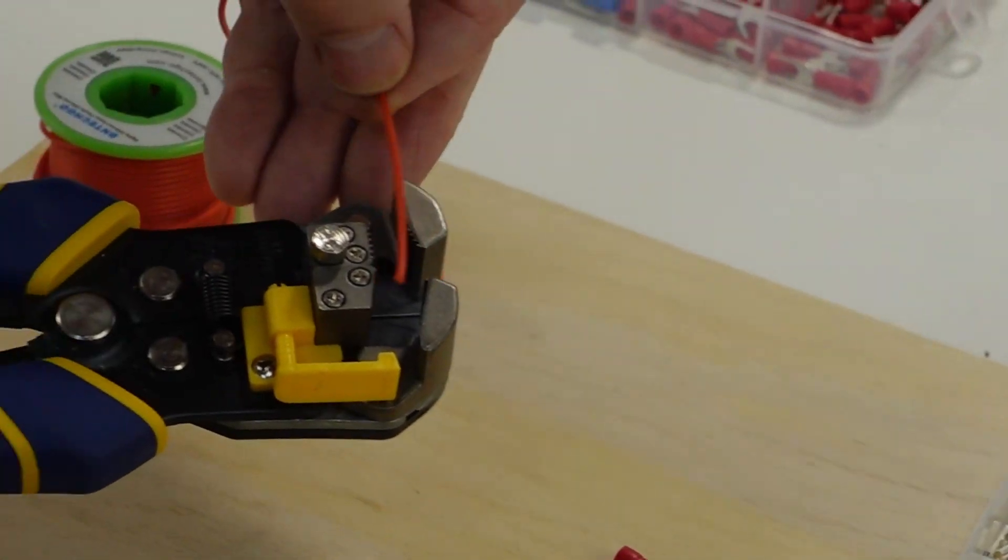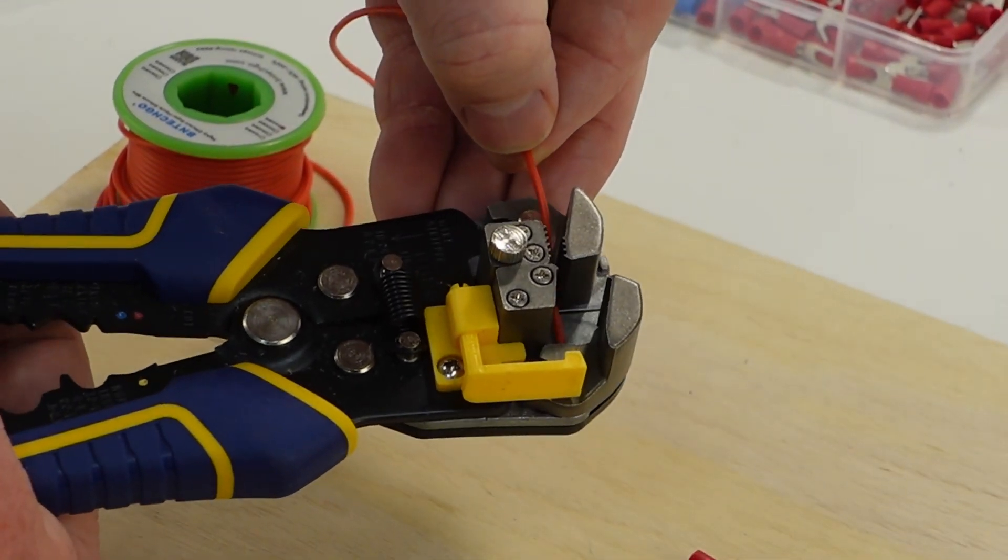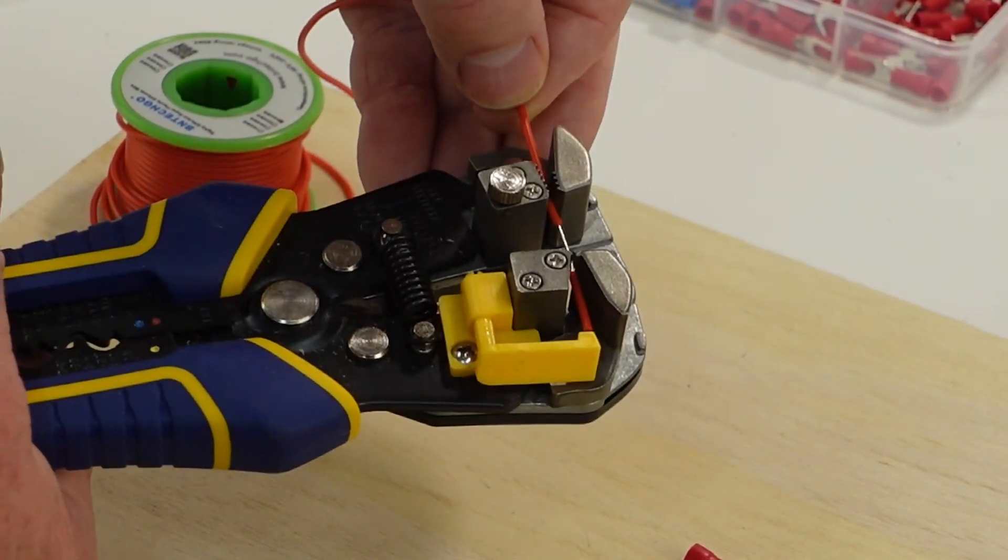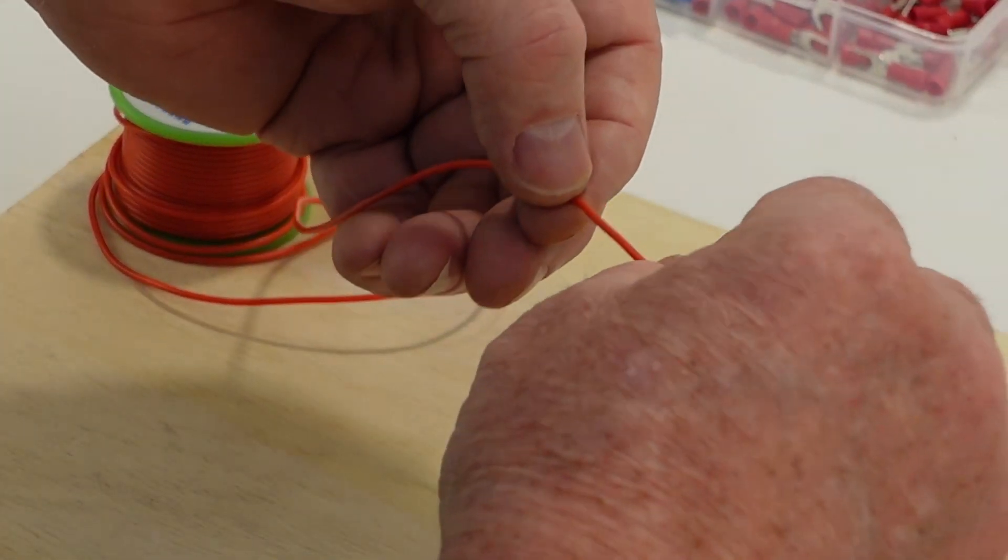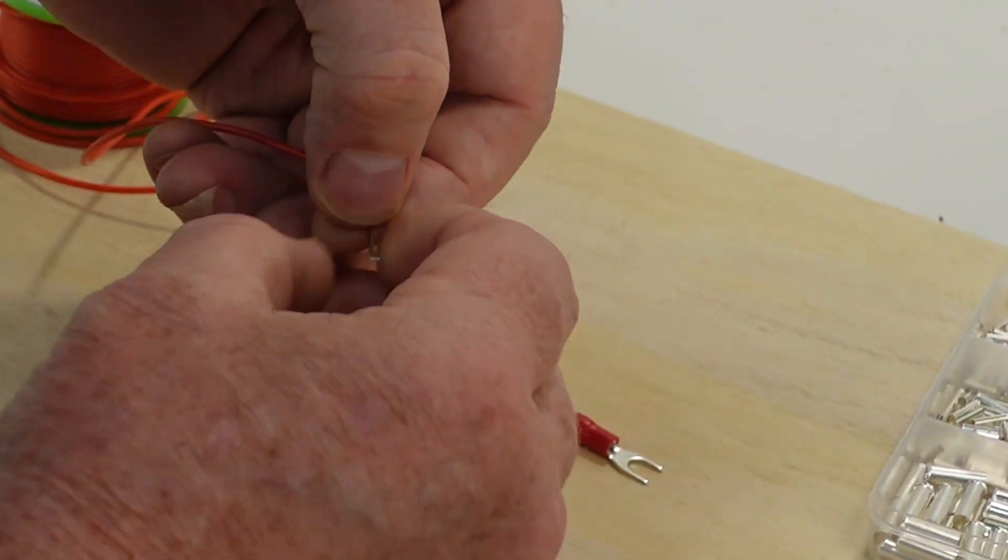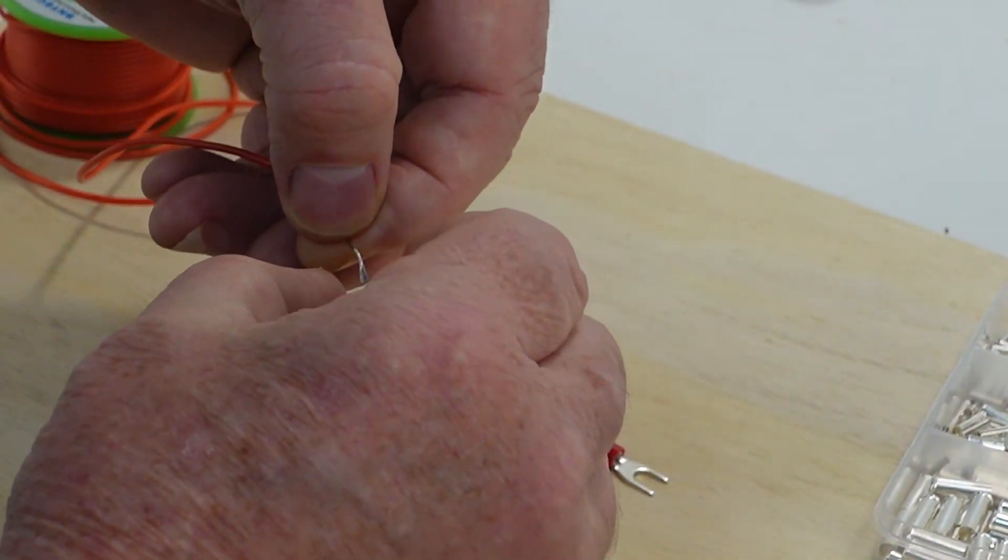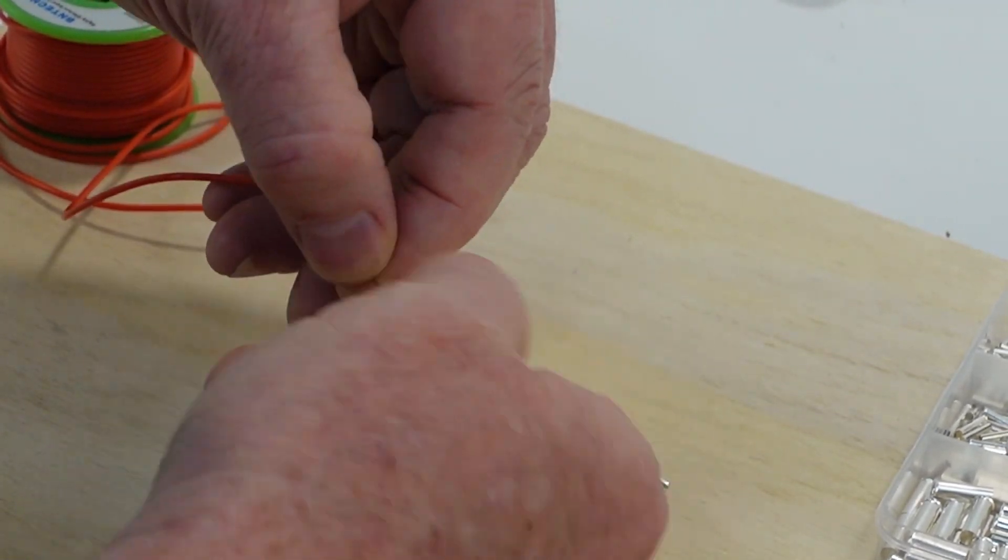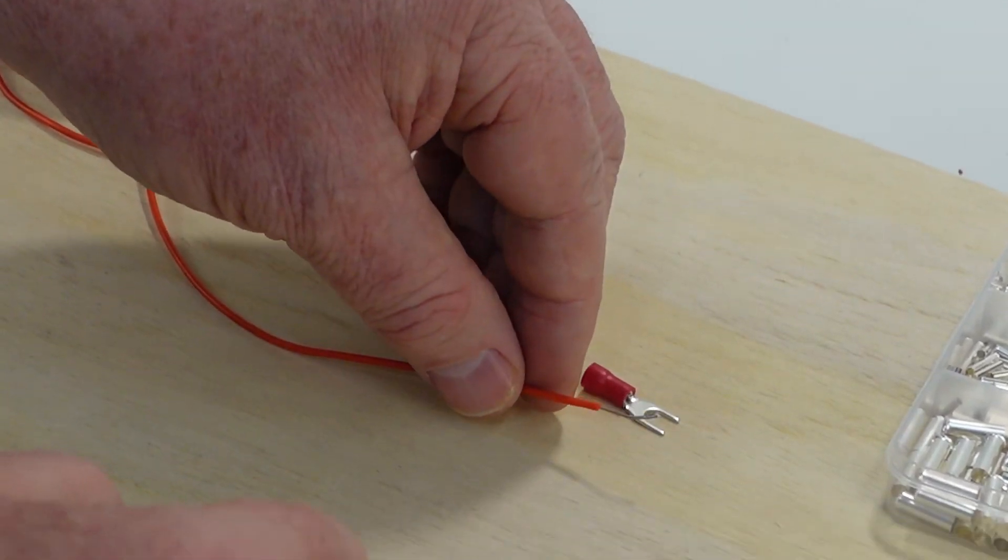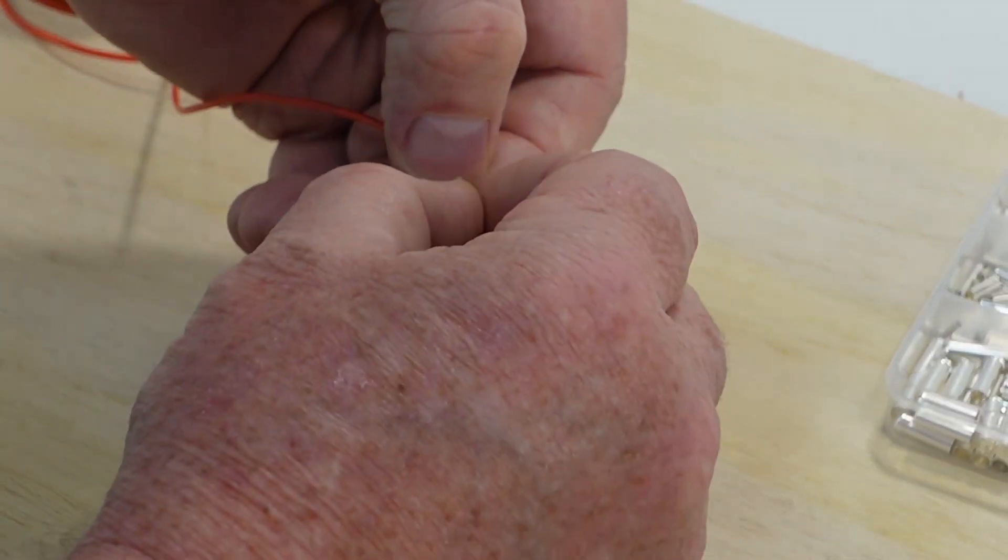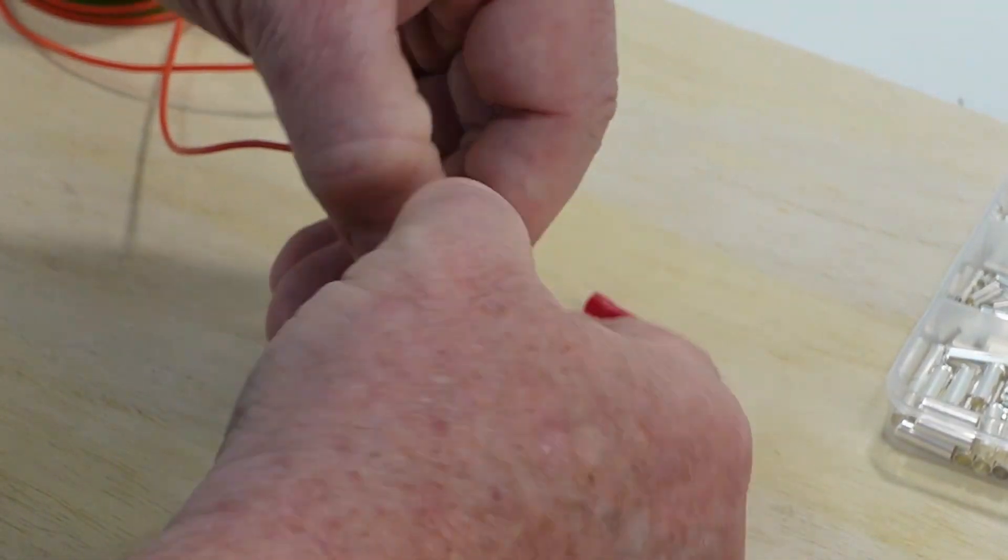But what we're going to do here is we're going to strip our wire. We'll give it a nice twist. This is stranded wire. So you want to twist it so that when we slide the ferrule on, it goes in nice and clean. And still, it's going to be kind of like threading a needle because this is all such small gauge stuff.